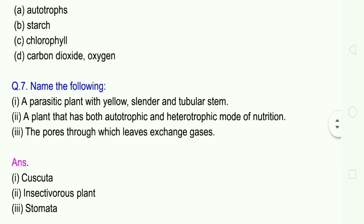Second one: A plant that has both autotrophic and heterotrophic mode of nutrition. Autotrophic is preparing own food, heterotrophic is absorbing food from other organisms. What plant is this? Insectivorous plant.